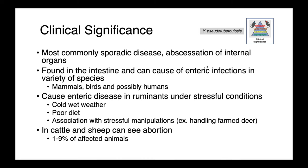Yersinia pseudotuberculosis most often causes a sporadic disease, so we don't necessarily see big outbreaks. In affected animals, we typically see abscessions of the internal organs. It's found in the intestine and can also cause enteric infections in a variety of species — mammals, birds, and possibly also humans. In ruminants, we see enteric disease under stressful conditions: diarrhea when we have cold, wet weather, a poor diet, and potentially stressful manipulations. Particularly in flighty species like farmed deer, they're more prone to these infections.